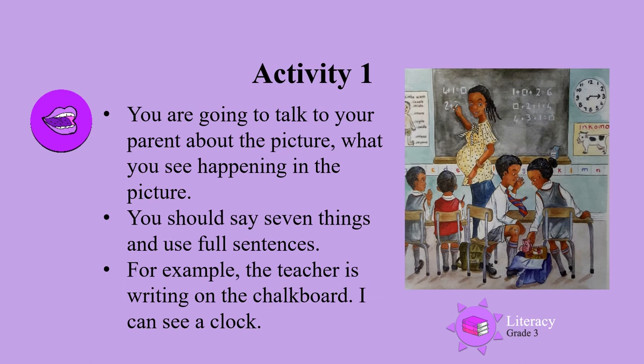Activity 1. You are going to talk to your parent about the picture. You need to tell your parent what you see happening in the picture. You should say seven things and use full sentences. For example: the teacher is writing on the chalkboard. I can see a clock.